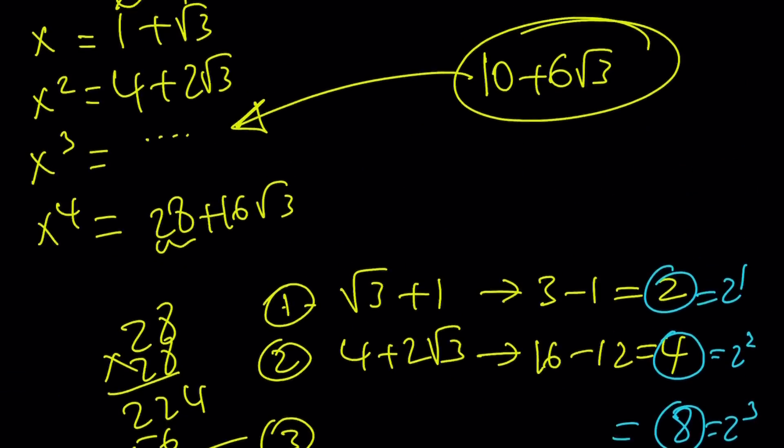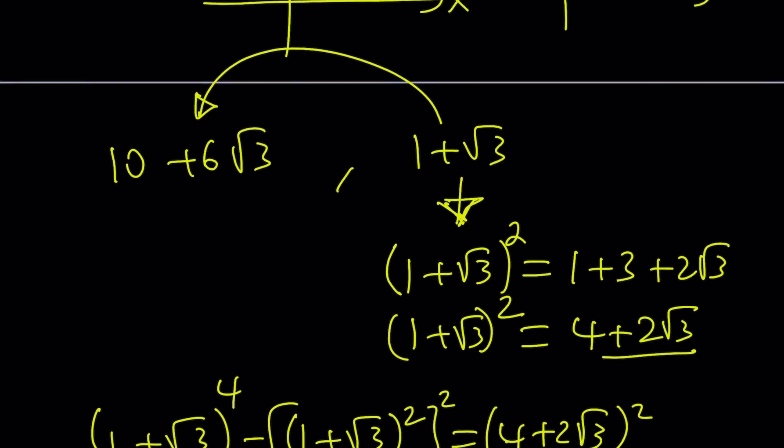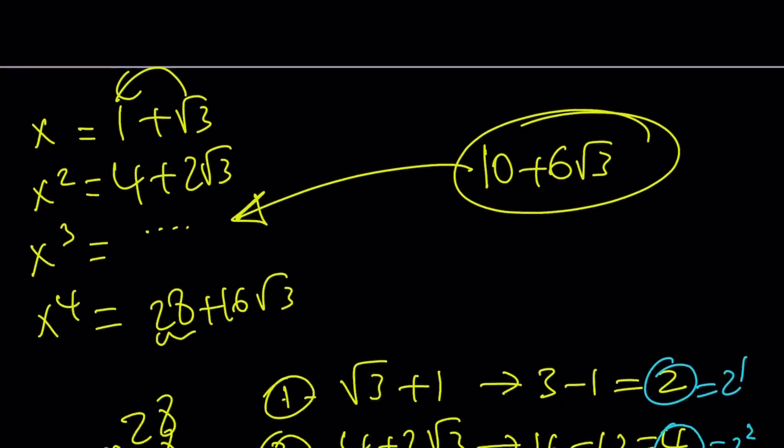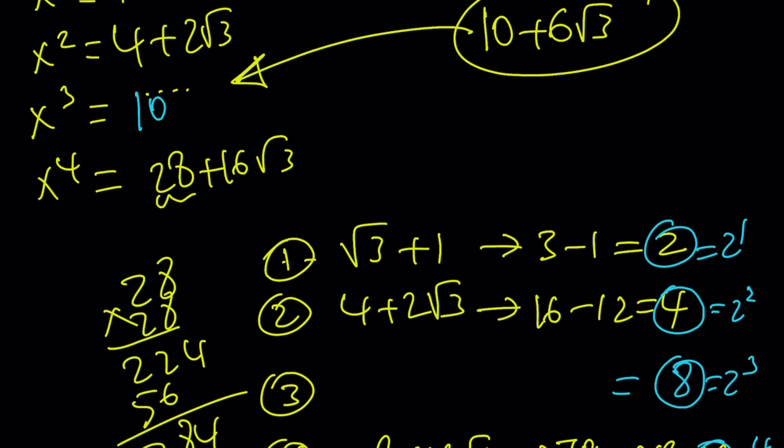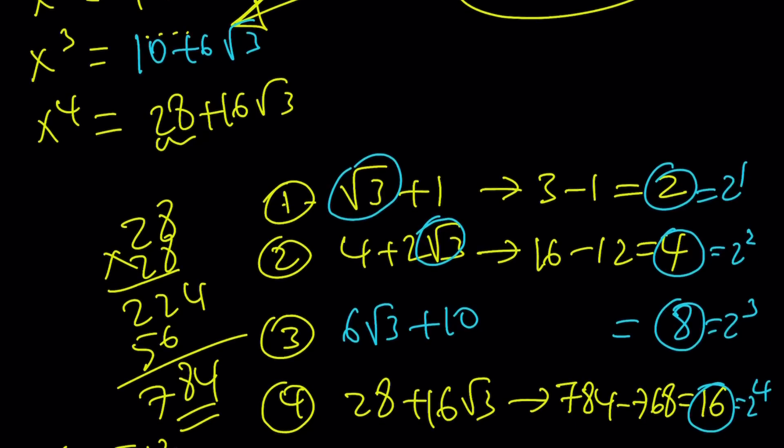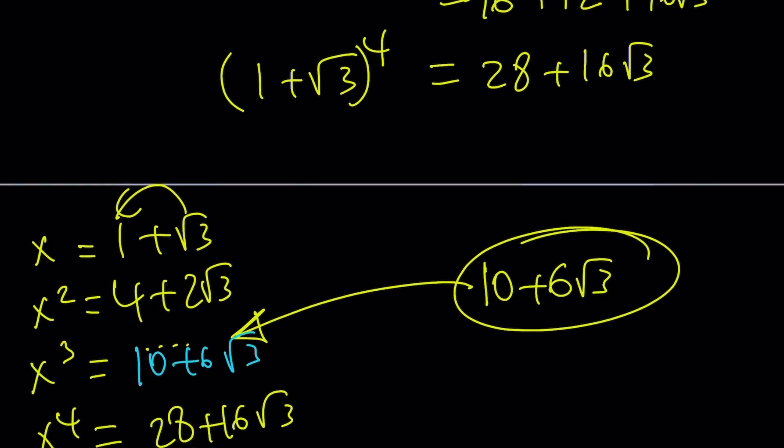And can I get 8 from this number? Let's take a look. What is that number? 10 plus 6 root 3. Suppose x cubed is 10 plus 6 root 3, but I'm going to write it as 6 root 3 plus 10. What is 6 root 3 squared? 36 times 3, which is 108. And 10 squared is 100. And their difference is 8. Yes, we got it. So that's the cube of this number it's supposed to be.